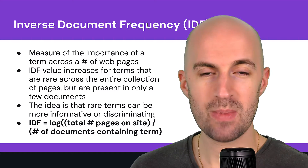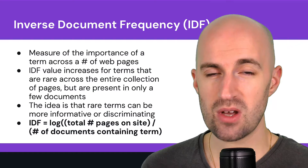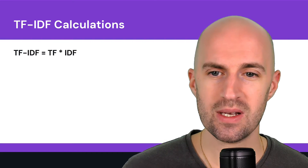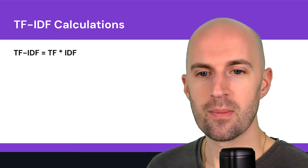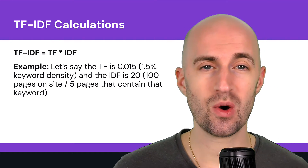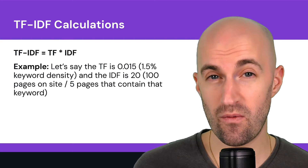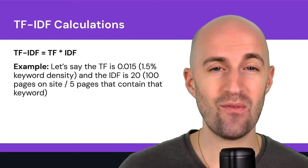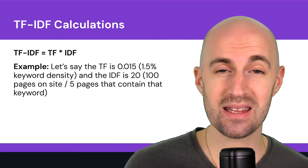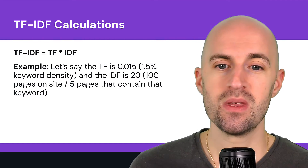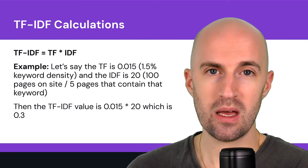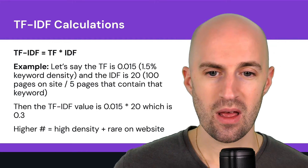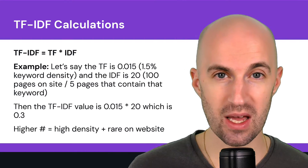The total TF-IDF score is the term frequency multiplied by the IDF value. For example, if the term frequency is 0.015 — in other words, 1.5% keyword density — and the IDF is 20 (say there are 100 pages on a website and 5 contain that keyword), then we multiply 0.015 by 20, giving 0.3. The higher that score, the higher the density and the more rare that keyword is on the website.